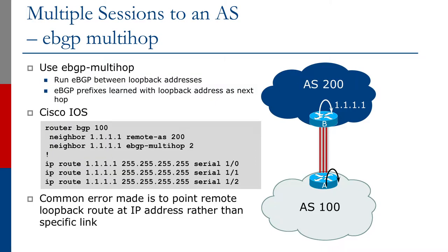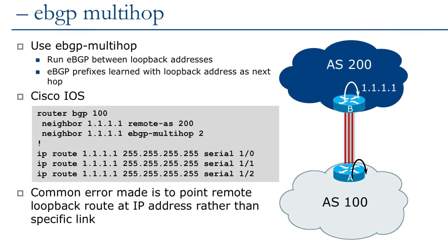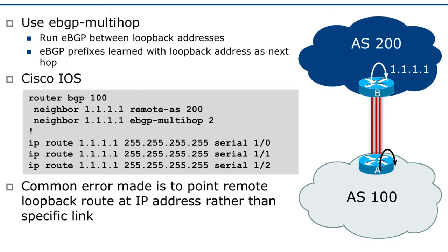eBGP MultiHop has become quite widely used on the internet today for handling BGP sessions between two ASs when there are more than a single link between the two autonomous systems, or even if there's some intermediate layer 3 device between the two autonomous systems. In this case, we run external BGP between loopback addresses in the two devices.